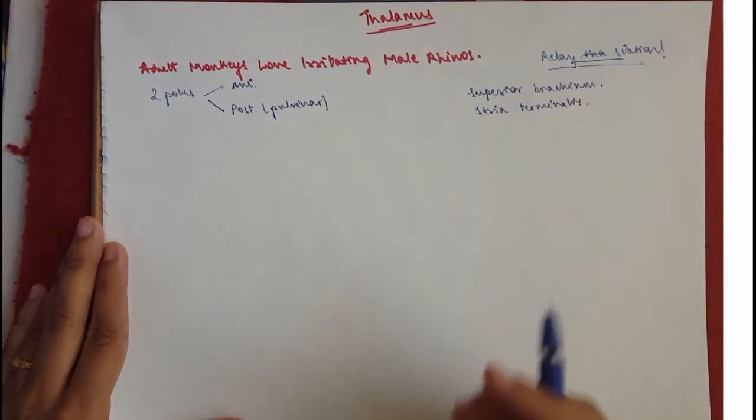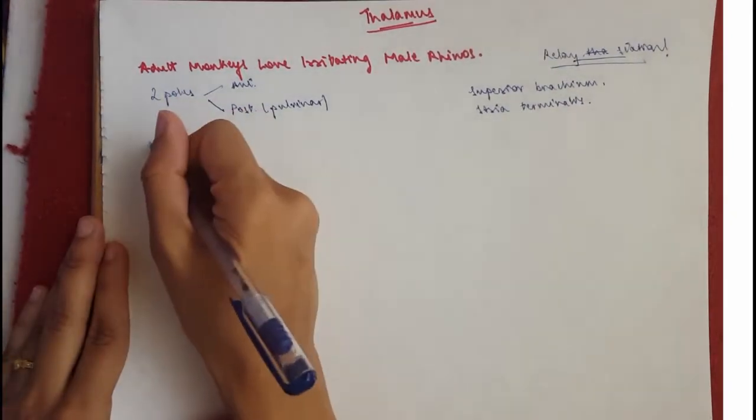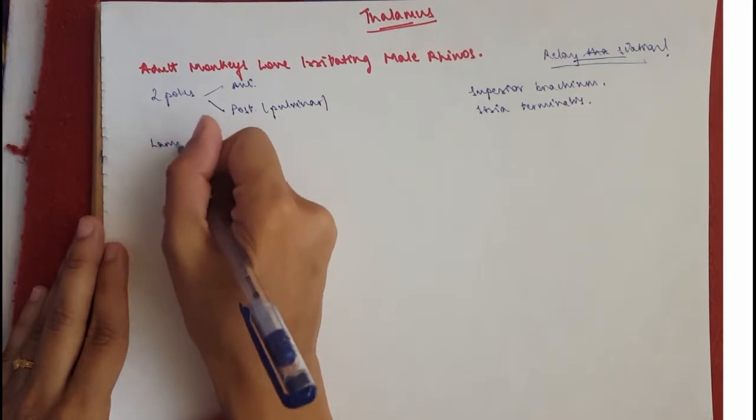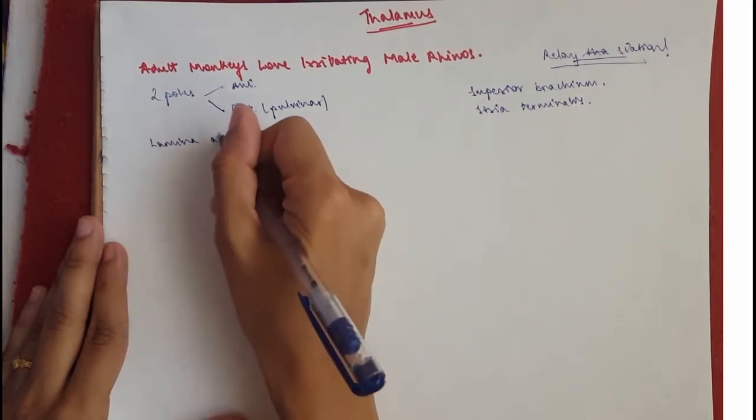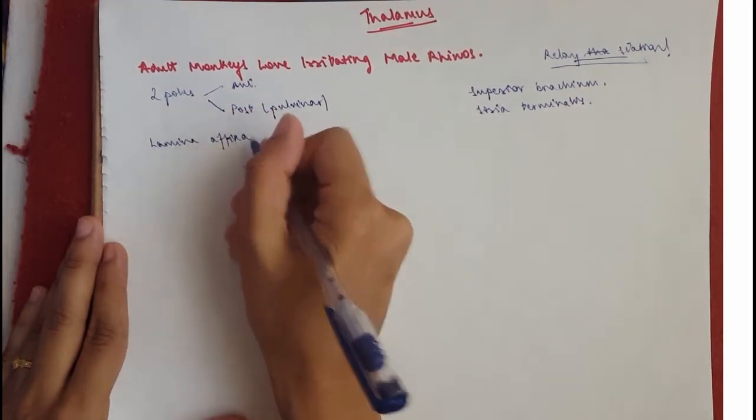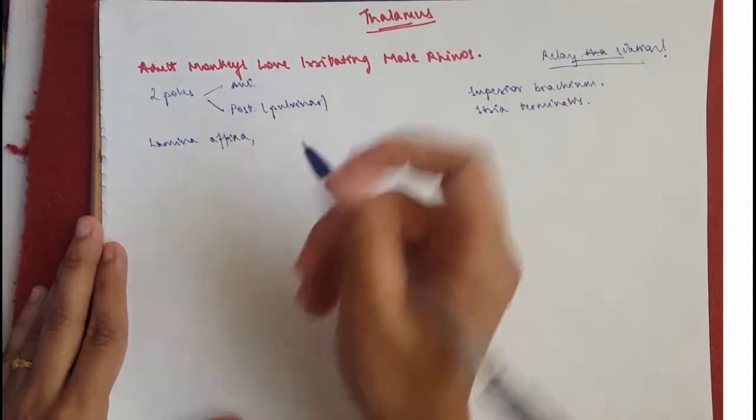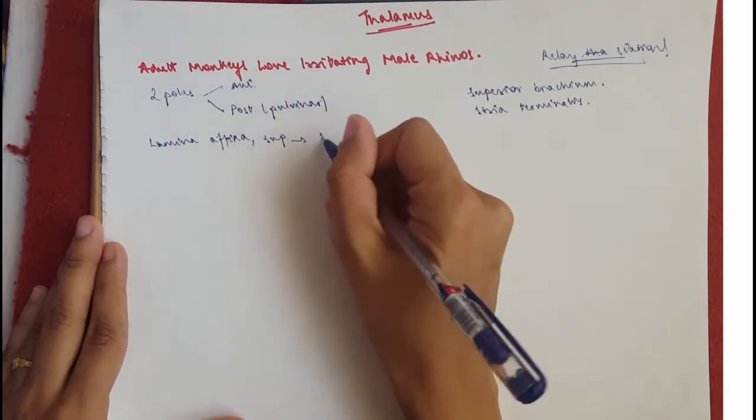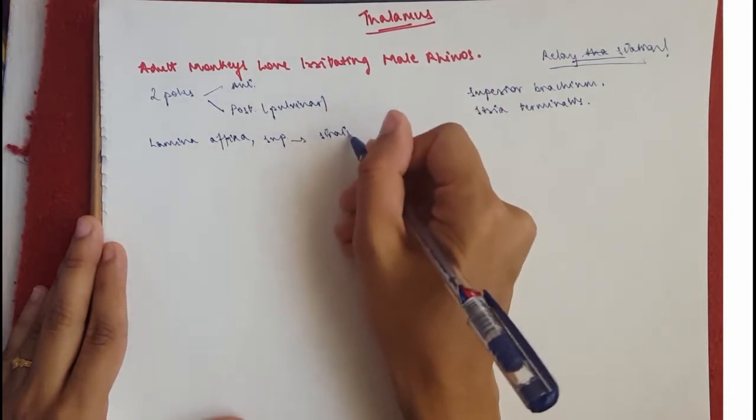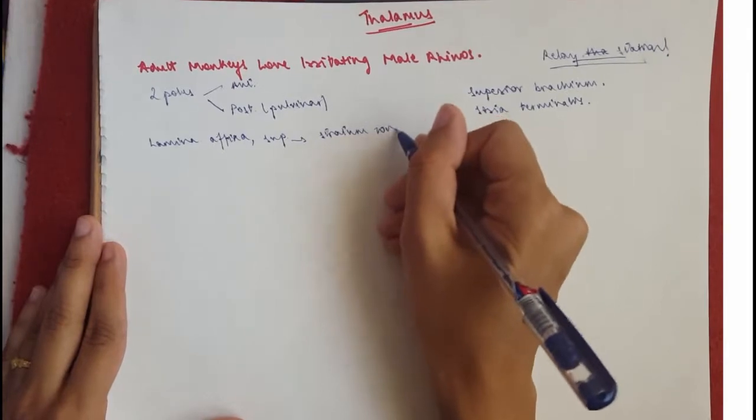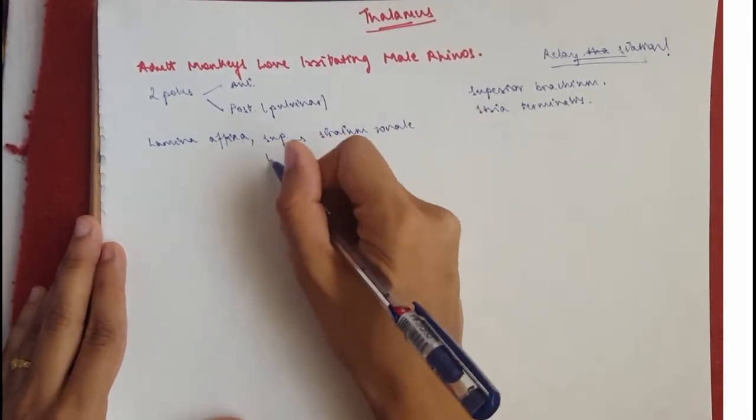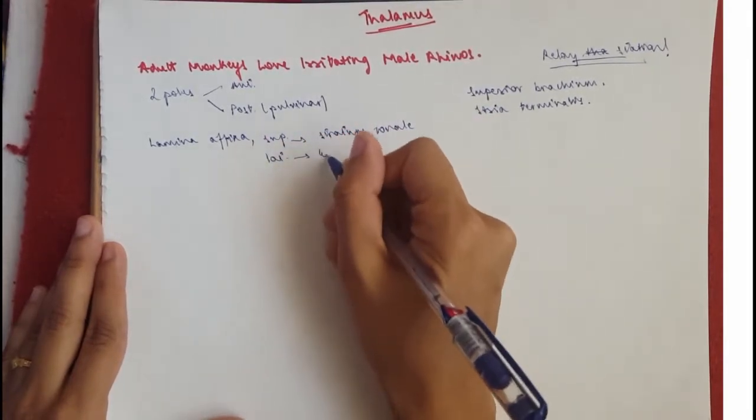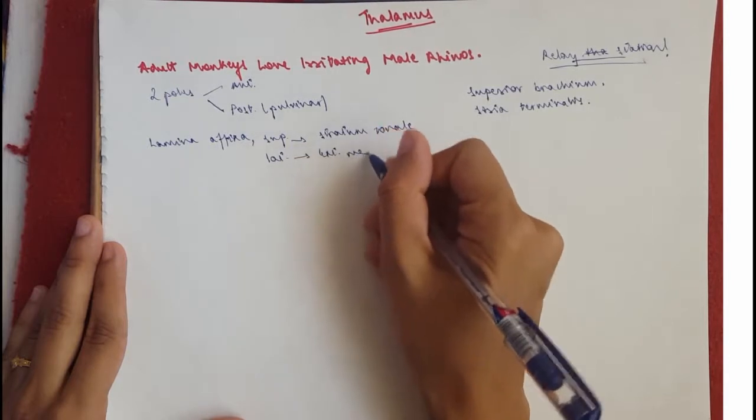Okay, so it's covered by the lamina affixor all around. Then superiorly on the superior surface is lined by the stratum zonale and the lateral surface is lined by the external medullary lamina.